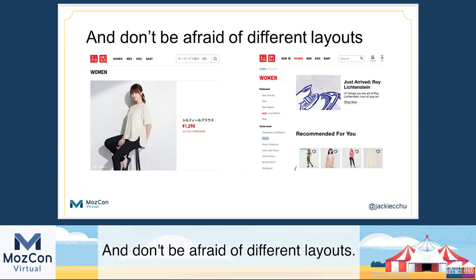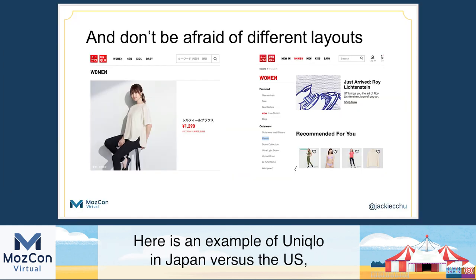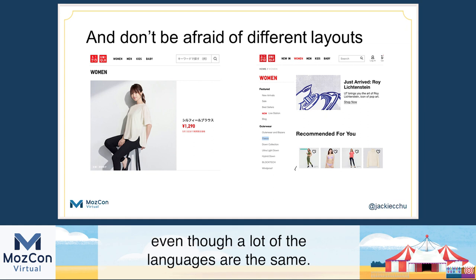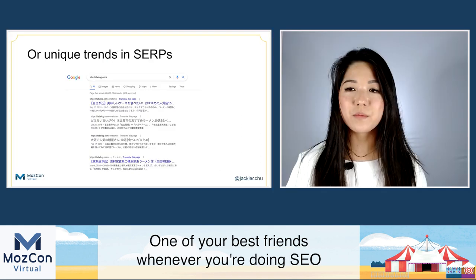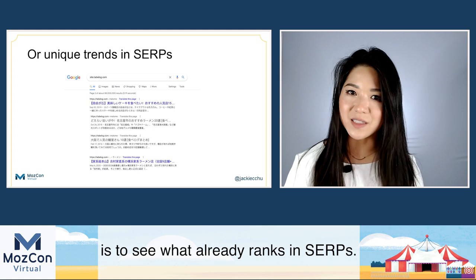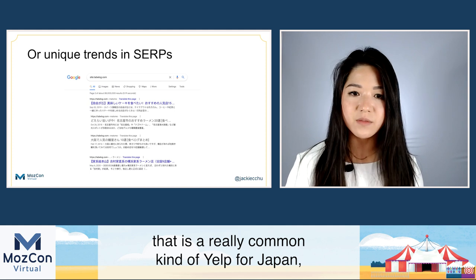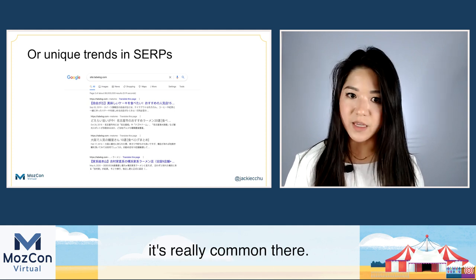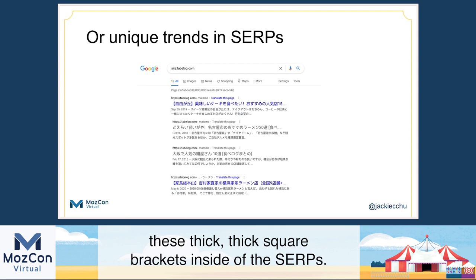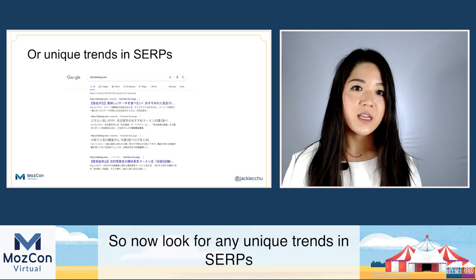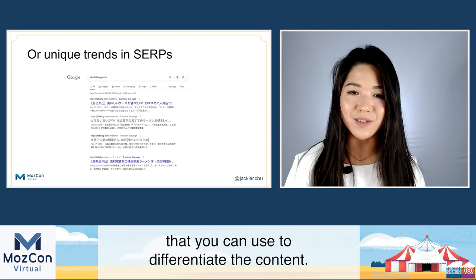Don't be afraid of different layouts. Here's an example of Uniqlo in Japan versus the US — they use vastly different layouts, and this is nice because it's really differentiating the content even though a lot of the languages are the same. One of your best friends in SEO is to see what already ranks in SERPs. Looking at Tabelog — a really common Yelp-like platform for Japan — you can see they use thick square brackets inside the SERPs. This is a really common pattern mostly in Japan and it's very effective from a click-through perspective. Look for unique trends in SERPs that you can use to differentiate content.